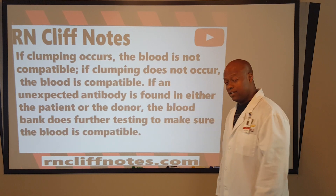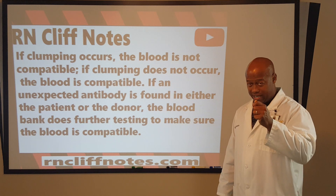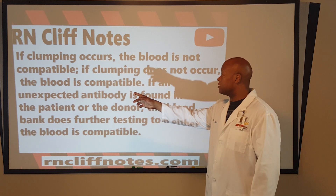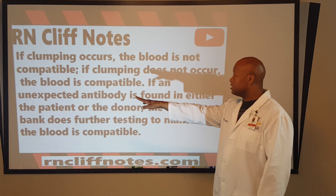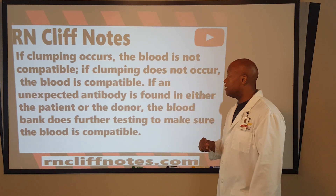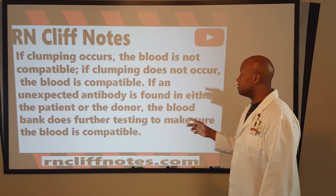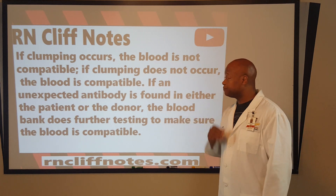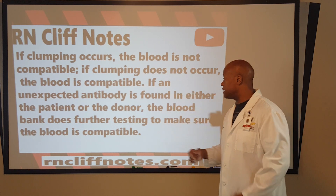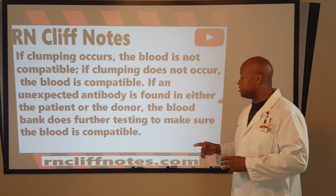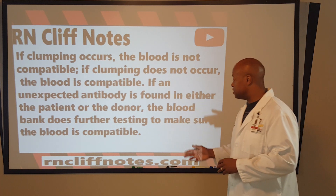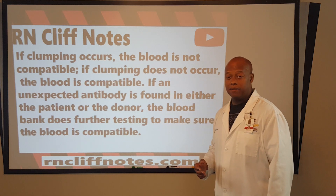Now, what we're watching that test tube for — we want to see if clumping occurs. If there's clumping, the blood is not compatible. If clumping does not occur, the blood is compatible. If an unexpected antibody is found in either the patient or the donor, the blood bank does further testing to make sure the blood is compatible.